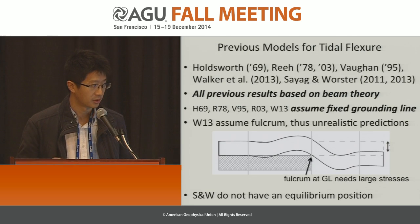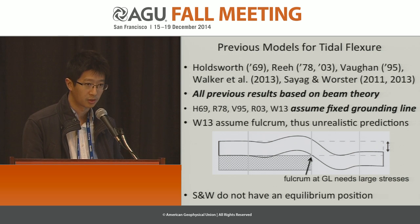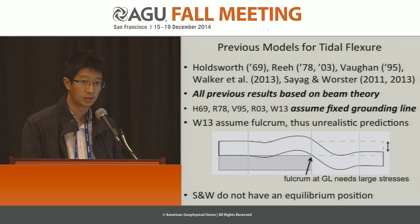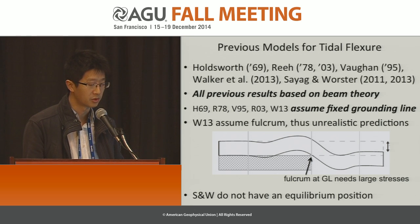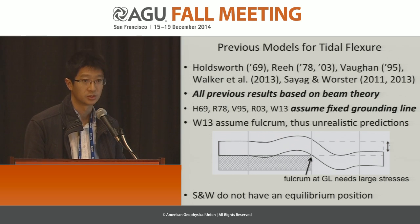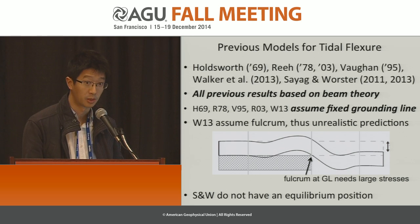There's been a lot of previous work done on a related topic, which is ice shelf flexure, going back quite a long way: Holdsworth in 1969, Niels Rhee in 78 and 03, David Vaughan in 95, Walker et al. 2013, and Cyag and Worcester in 2011 and 2013, who have all looked at this problem of ice shelf flexure. At least some of this work is difficult to apply to the question of how grounding lines migrate. One reason is that all of this previous work is based on beam theory, an approximation to the elastic deformation that occurs in tidal flexure. Furthermore, most of these papers assumed a fixed grounding line, so they don't really address how far the grounding line migrates. The first five papers listed here all assume a fixed grounding line.